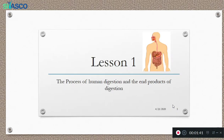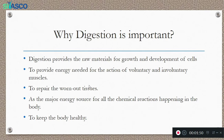Let's proceed to the first lesson: the process of human digestion and the end products of digestion. This slide gives you a brief idea about why digestion is important. Digestion provides the raw materials for growth and development of cells. It provides energy needed for the action of all voluntary and involuntary muscles in the body, to repair worn-out tissues, and as a major energy source for all chemical reactions happening in the body, keeping you healthy.